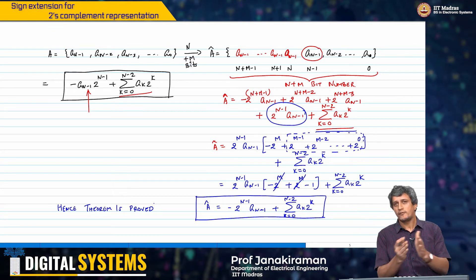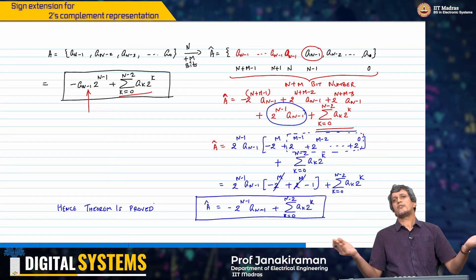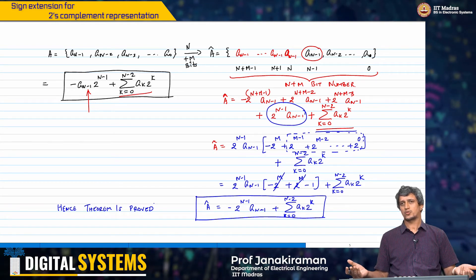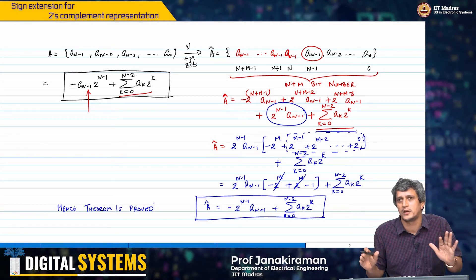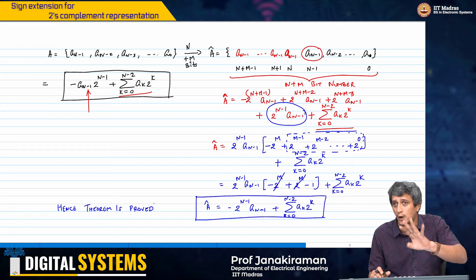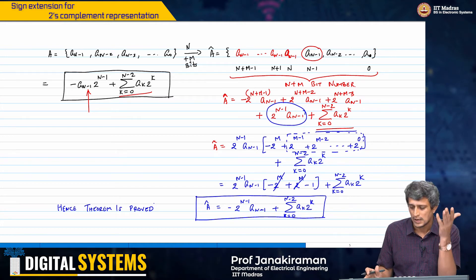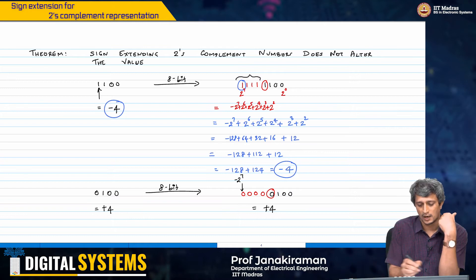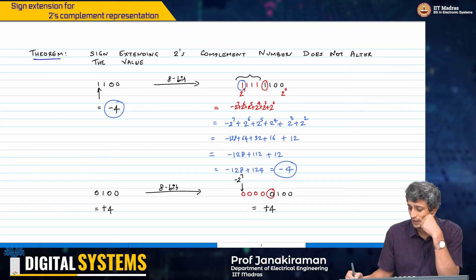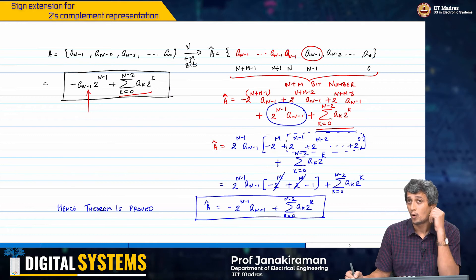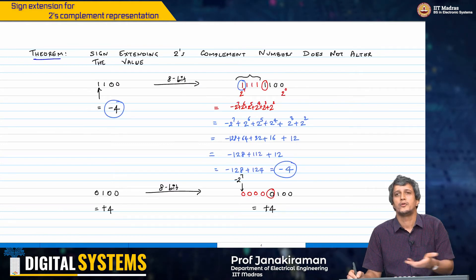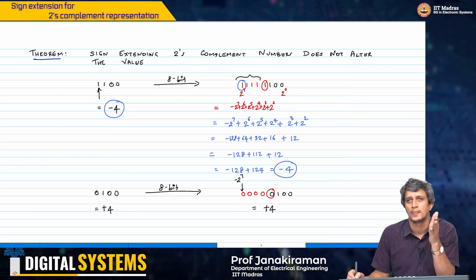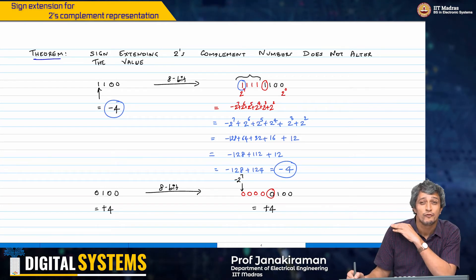This is a formal proof. We have not assumed any specific values for A_0 to A_(n-1). We have just said sign extending it leaves it unaltered — whether A_(n-1) is 0 or not, it does not matter. That is the theorem we stated and proved. You must over time get used to writing such formal proofs — just enumerating for a specific set of cases and showing it works is not a proof.